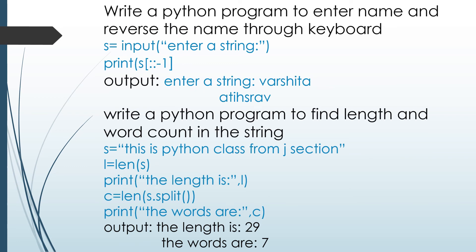The next program: write a Python program to enter a name and reverse it from keyboard input. I wrote s = input('Enter a string:'). To reverse the string, we use s[::-1]. The output: when I entered 'Varshita', the reversed output was 'ATIHS RAV'.